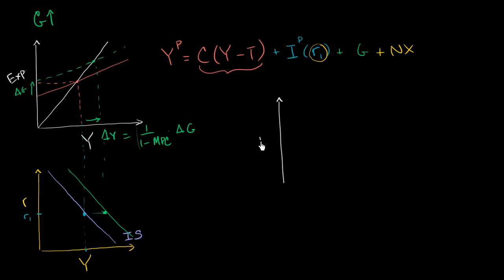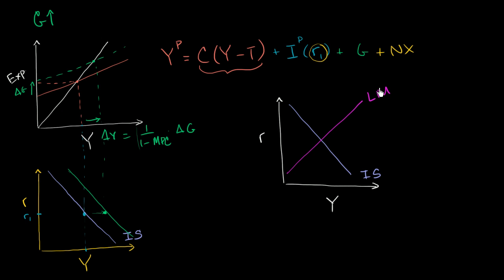So let's draw the IS-LM model. On one axis we have real interest rates, on the other we have aggregate income or real GDP. Our IS curve looks something like that, and our LM curve in magenta might look something like that. If we have an increase in government spending, the IS curve shifts to the right. Our new equilibrium GDP is higher and our new equilibrium interest rate is higher, just from the shift to the IS curve.